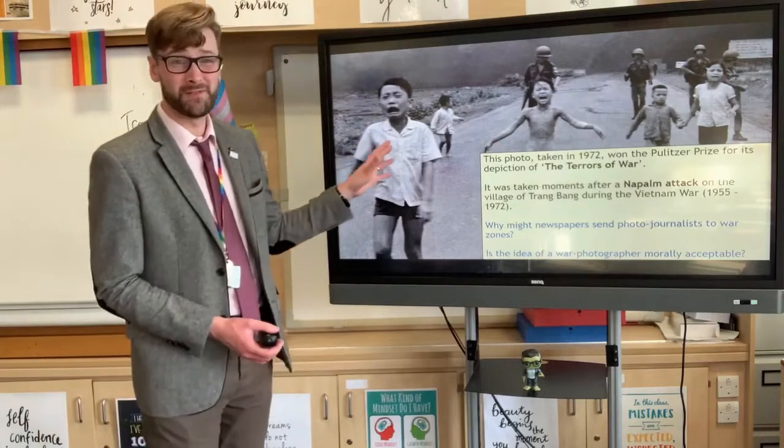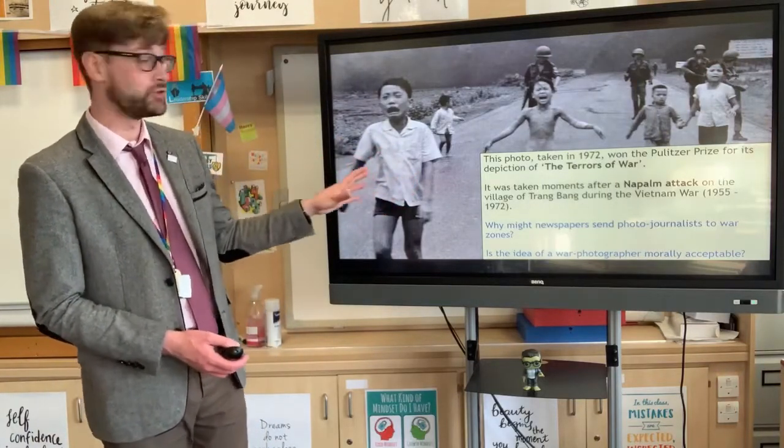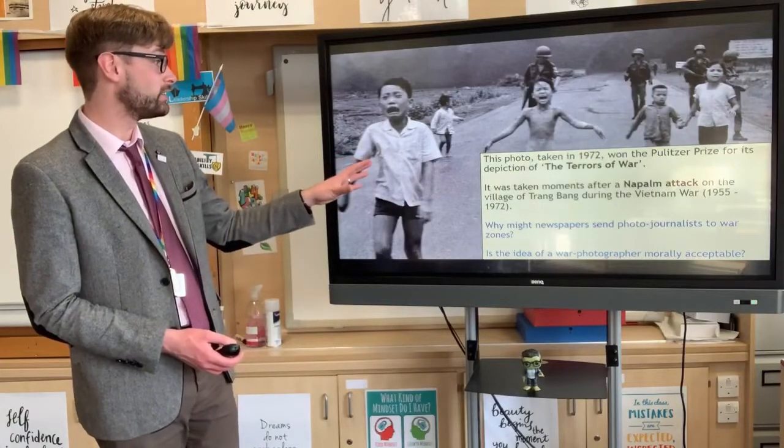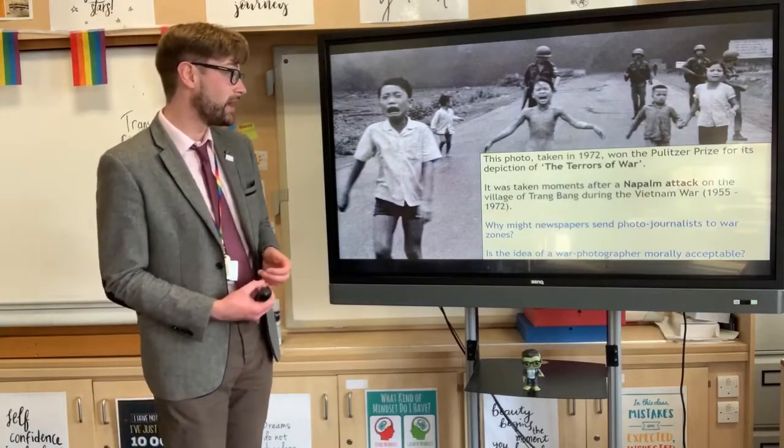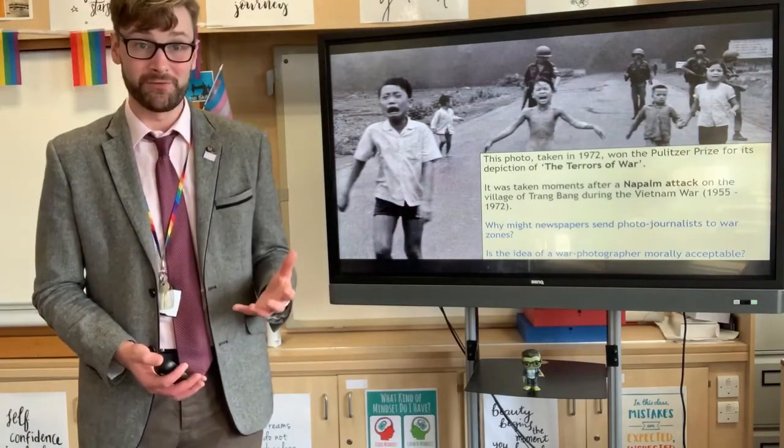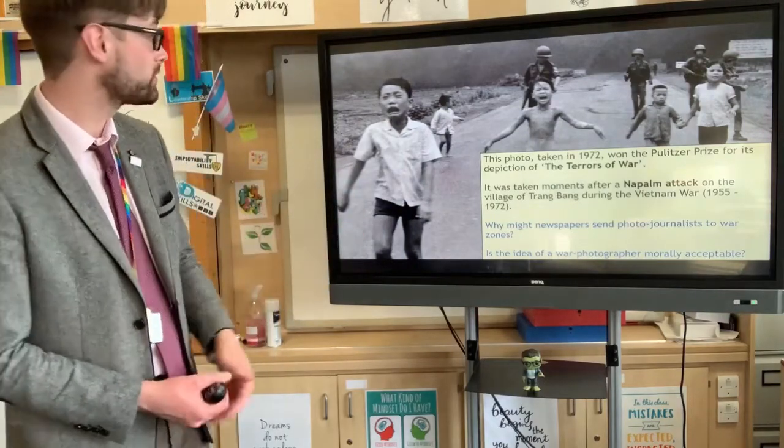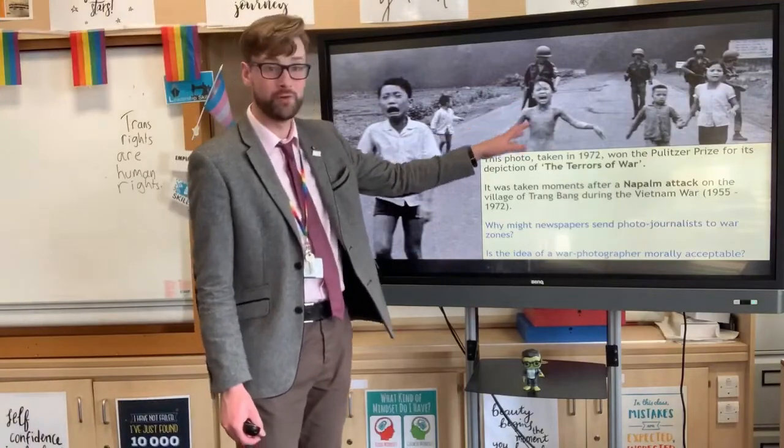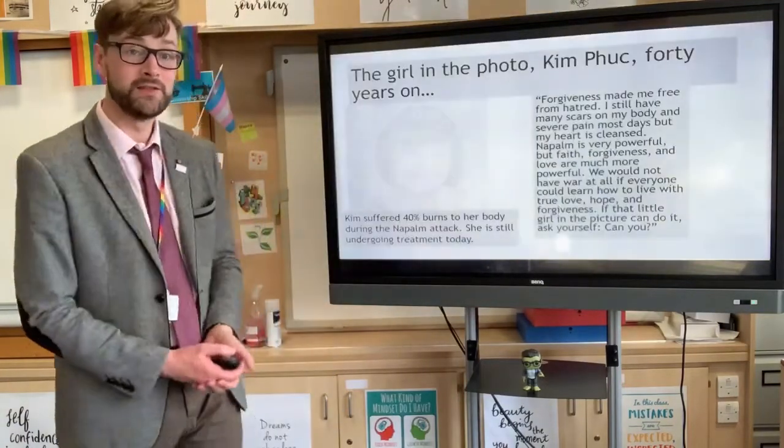This is one of the most well-known examples of a photograph taken during a conflict. This was taken in 1972 during the napalm attacks in the Vietnam Wars. The image really speaks for itself. It's horrifying. These are children fleeing from the scene of a napalm burn, and this girl that you see in the center here, screaming, was very seriously burned. She survived. This is her today.